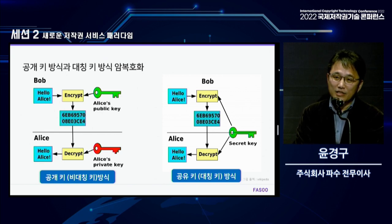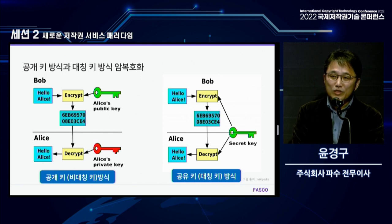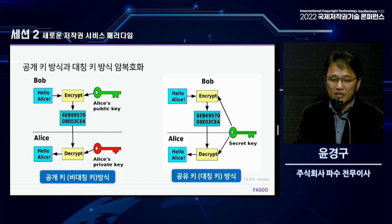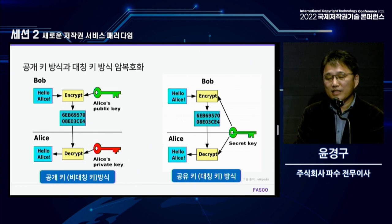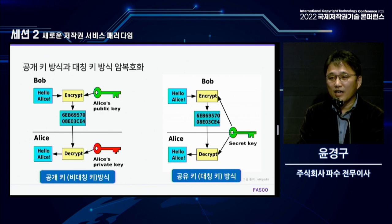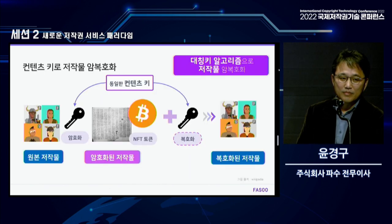Let me briefly explain how you can access encrypted copyrighted work using a decryption key, also called a symmetric key. There is a public key and there is a private key. If you use a public key for encryption, you use a private key for decryption — the two keys are in an asymmetric relation. Public keys are open to everyone, while private keys are exclusive to you. There is also a symmetric key, which can be used for both encryption and decryption. A public key is slow because it requires a large amount of computation, whereas a symmetric key is much faster.